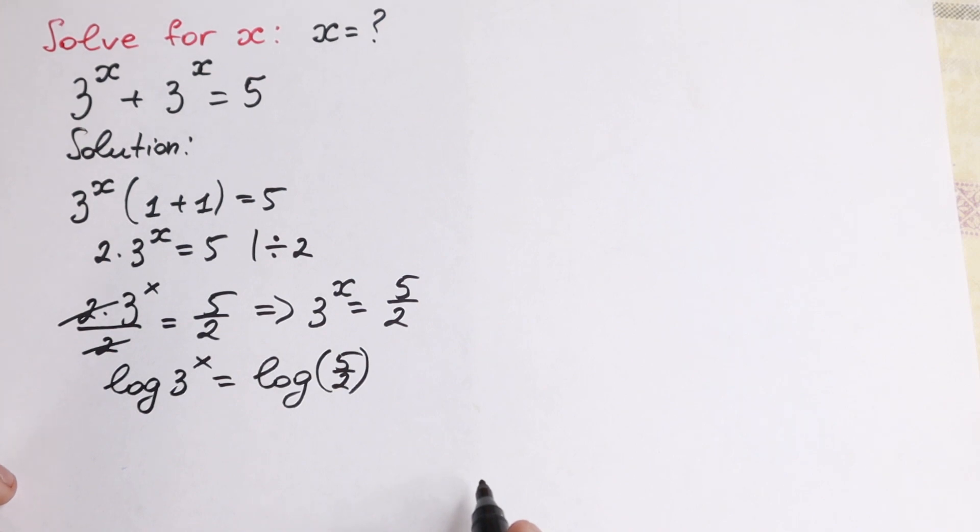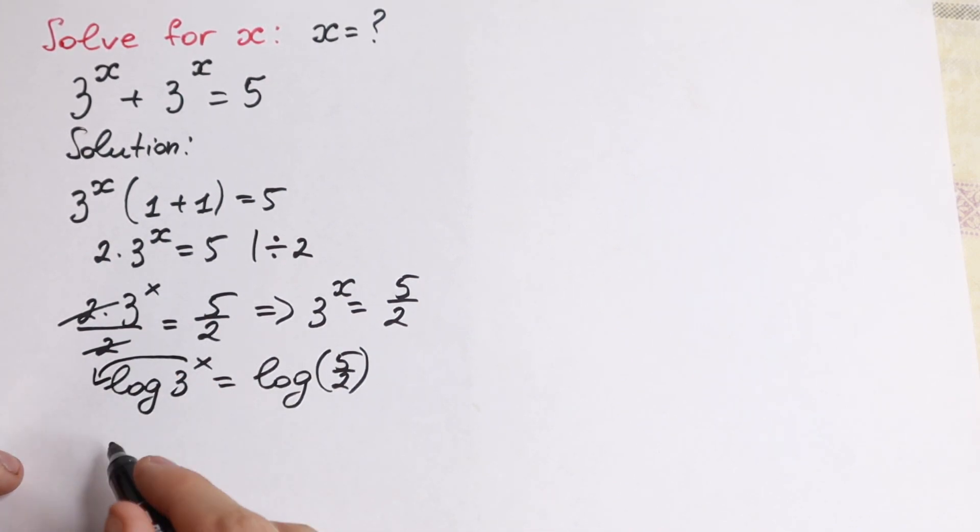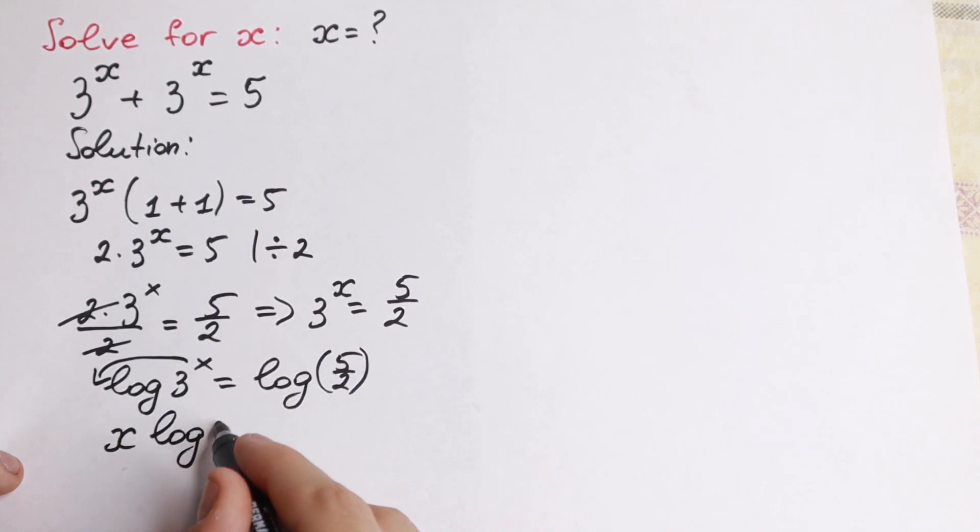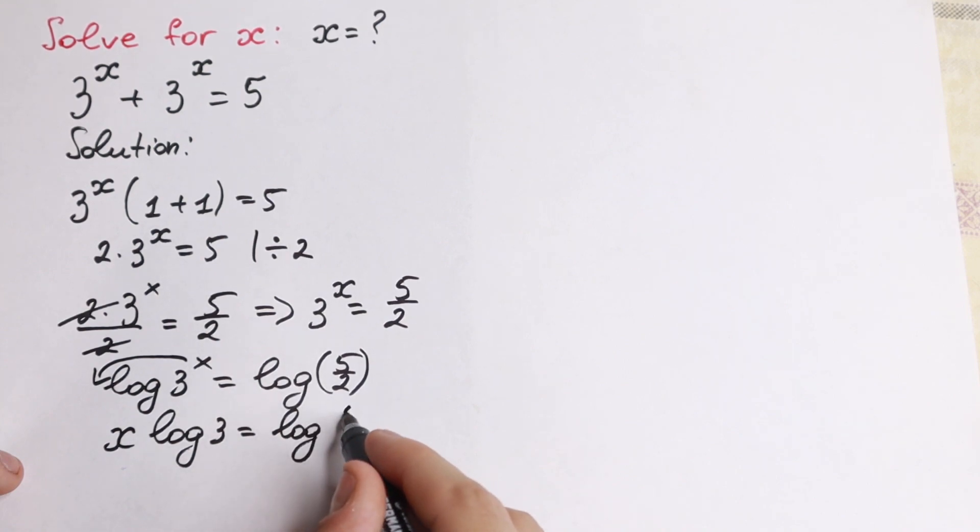Just taking log from both sides. We know that property, that x jumps right here in the beginning, and we will have x log 3 equal to log 5 over 2.